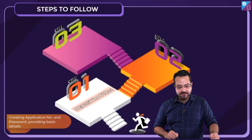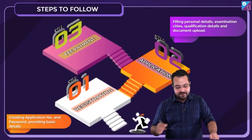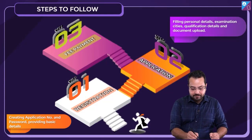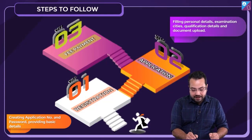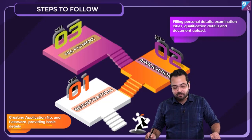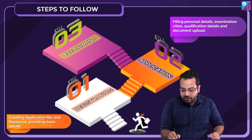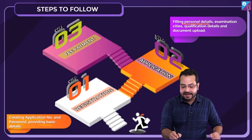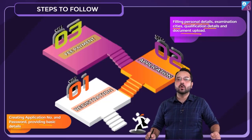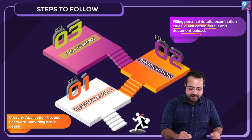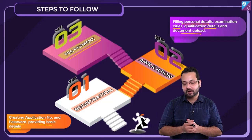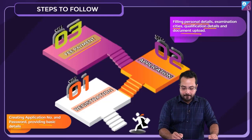The registration process is a three-step process. The first step is registration, where you create an application number, password, and provide basic details. The second step is the application, where you fill in personal details, examination cities, qualification details, and upload documents. The third step is fee payment. So it's a three-step process — do keep that in mind.